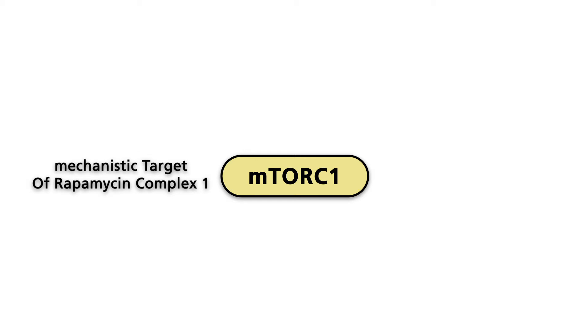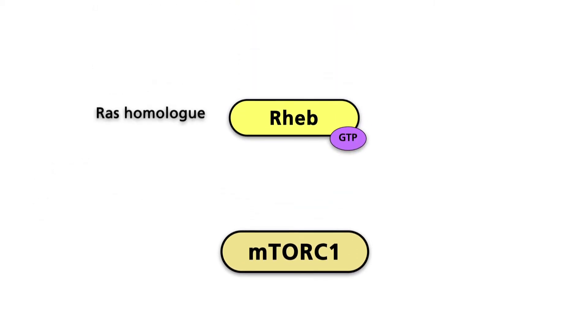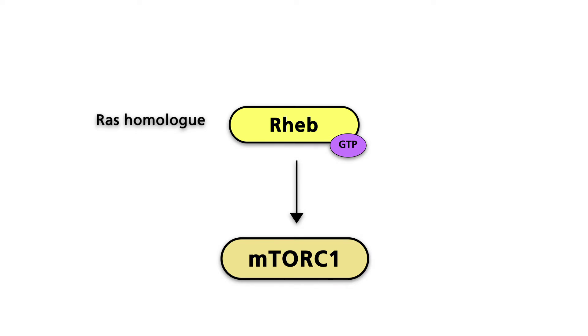mTOR is activated by Rheb, a RAS homolog and a member of the family of small GTPases in its GTP-binding form.